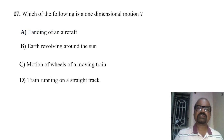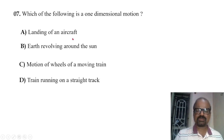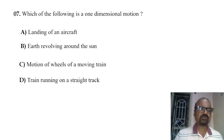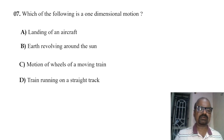Which of the following is a one-dimensional motion? Landing of an aircraft involves motion in a plane (X and Y axes). Earth revolving around the sun and motion of wheels of a moving train are not one-dimensional. A train running on a straight track is the example of one-dimensional motion.